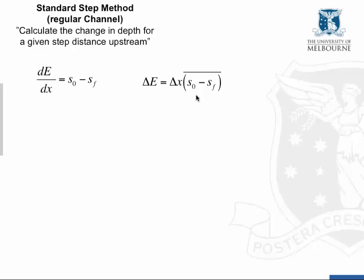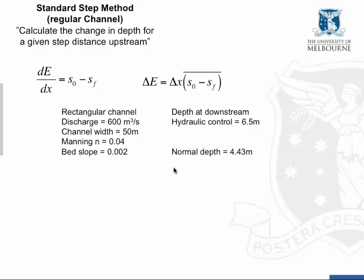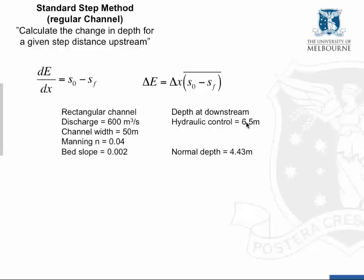We estimate that average based on values at either end of the step. Working through the same example with this method: we have a rectangular channel, 600 cubic meters per second, channel width of 50 meters, and a downstream control depth of 6.5 meters above the bed, giving us an M1 profile.